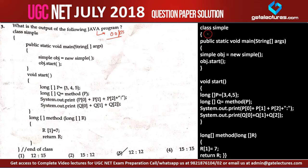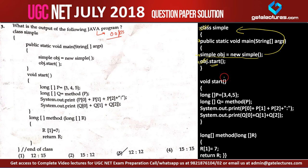This is the function which is class Simple. Now in this Simple class, when the program execution will start, it will start from the main function. In the main function we have created an object — Simple object — of new Simple, that is an object of the same class type. Now we are calling object.start, so for this object we are calling the start function. In main we are calling the start function on the same object.